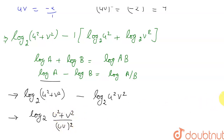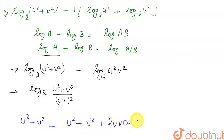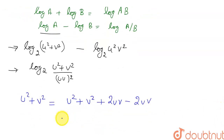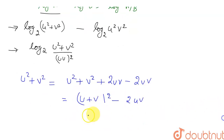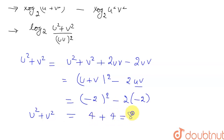To find u² + v², I write it as u² + v² + 2uv - 2uv, which equals (u + v)² - 2uv. Substituting the known values: (-2)² - 2(-2) = 4 + 4 = 8. So the value of u² + v² is 8.